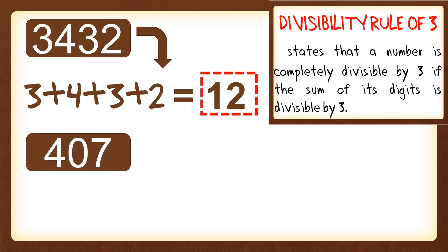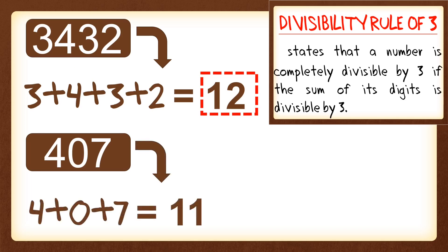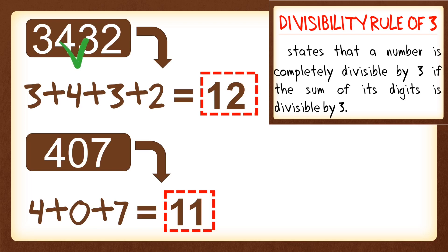The next number is 407. Again, we're going to get the sum of its digits: 4 plus 0 plus 7, which gives us a sum of 11. We then determine if 11 is a multiple of 3. It is not a multiple of 3, so 407 is not divisible by 3.